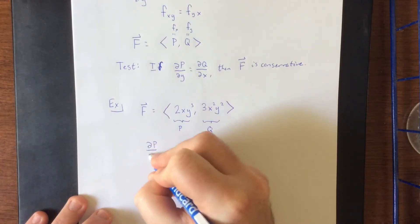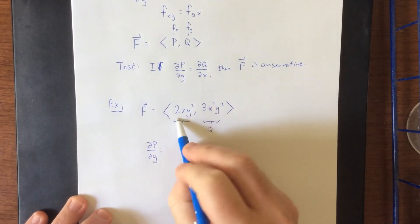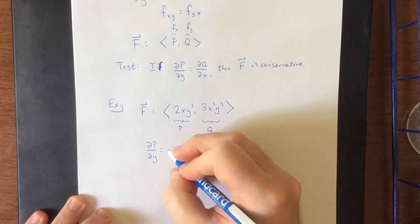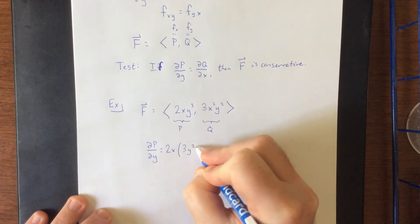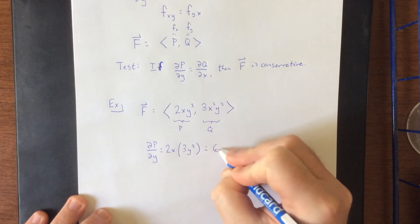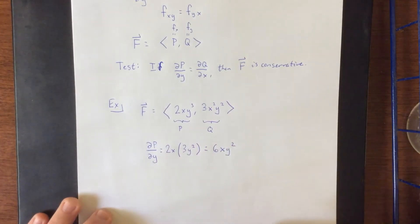So partial derivative of p with respect to y would be equal to, we treat 2x as though it's a constant multiple, and then we differentiate the y cubed with respect to y, giving us a total of 6xy squared.